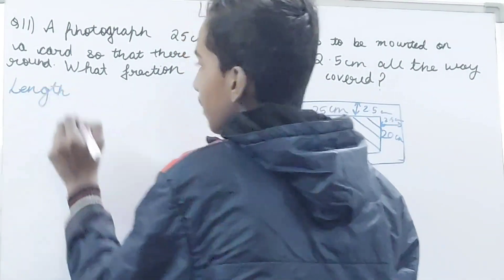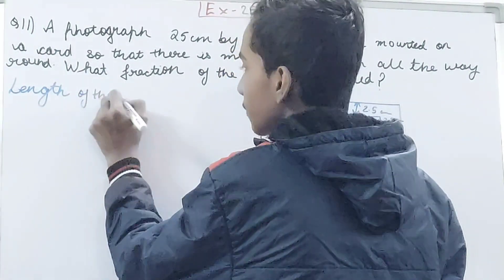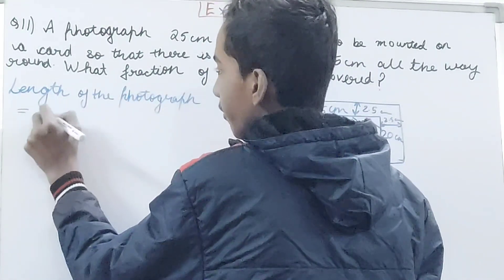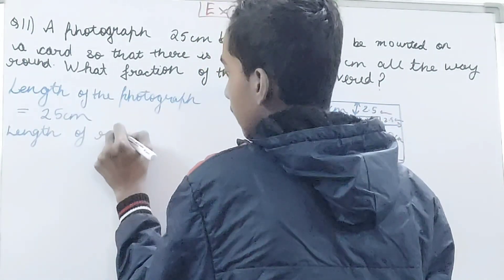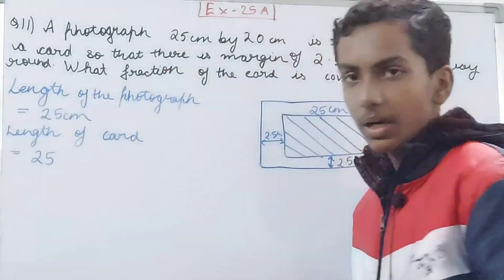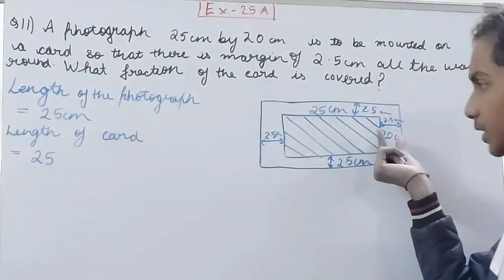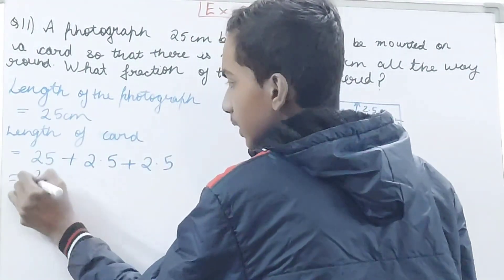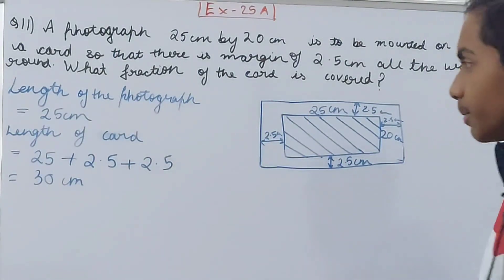The dimensions of the card are not given, but dimensions of the photograph are given. The length of the photograph is 25 centimeters. The length of the card will be 25 — because the photograph takes this much — plus 2.5 on one side and 2.5 on the other side. So 25 plus 2.5 plus 2.5 equals 30 centimeters.